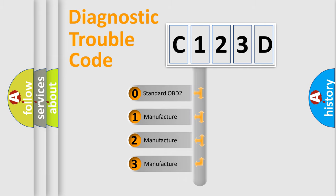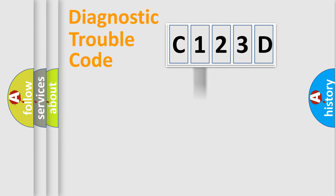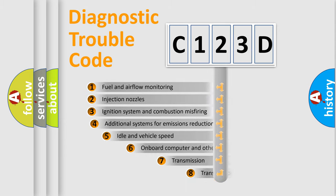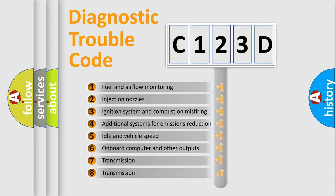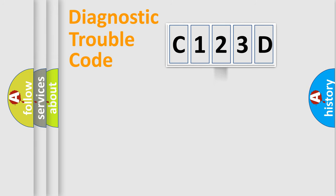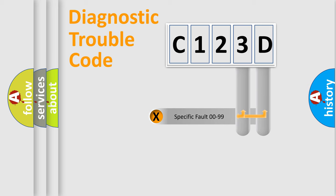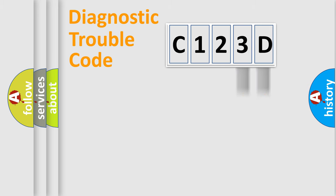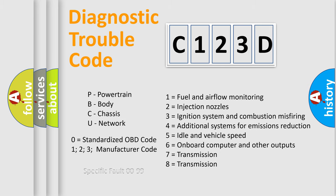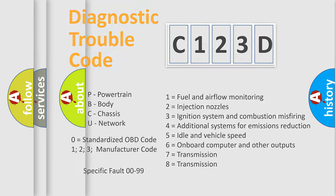If the second character is expressed as zero, it is a standardized error. In the case of numbers 1, 2, or 3, it is a manufacturer-specific error expression. The third character specifies a subset of errors. This distribution is valid only for the standardized DTC code, where only the last two characters define the specific fault of the group — and only when the second character is zero.